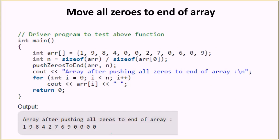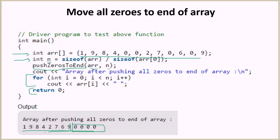Let's look at the code. We have the given array, the same one from our example. We do sizeof(array) divided by sizeof the first element to determine the number of elements. Then we call the function pushZerosToEnd, which takes the array and its size as arguments. Finally we print the whole array and return zero. For this input, the output will be that all four zeros are shifted to the right and the order of the non-zero elements is preserved.